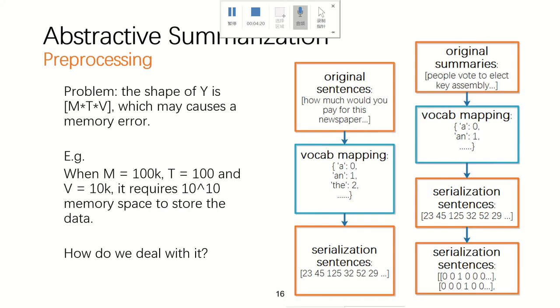Next I will talk something about preprocessing. So because our model needs an input format, we need to transfer our original sentence to a serialization sentence and transfer the summaries to a one-hot matrix. The one-hot matrix has a problem because the shape of the one-hot matrix is M by T by V.